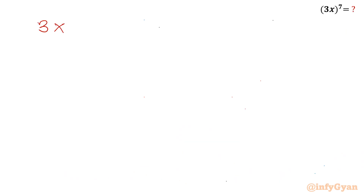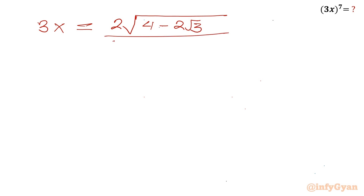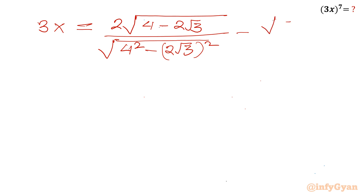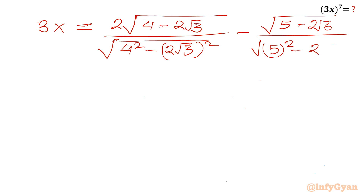So I will write 3x is equal to 2 times √(4 − 2√3) divided by √(4² − (2√3)²). For the second term I will be writing √(5 − 2√6) in the numerator, and in the denominator √(5² − (2√6)²).